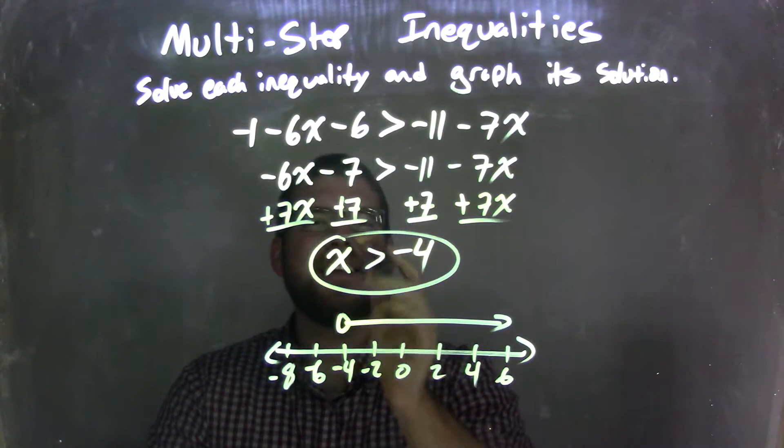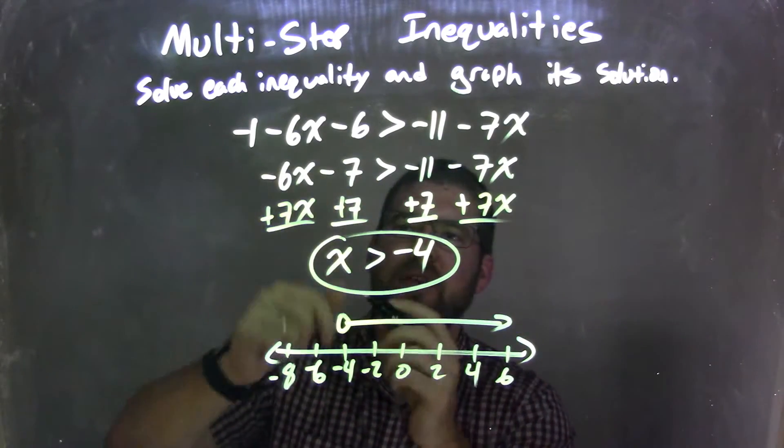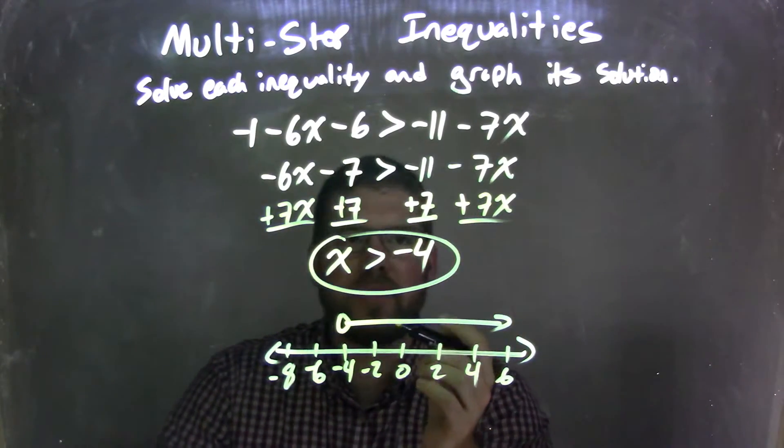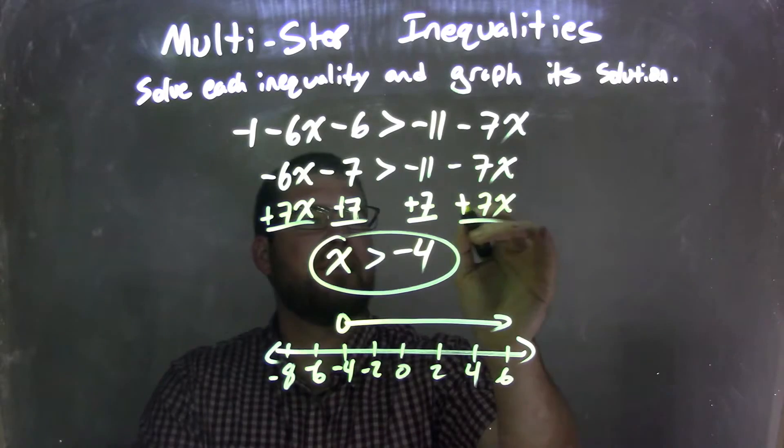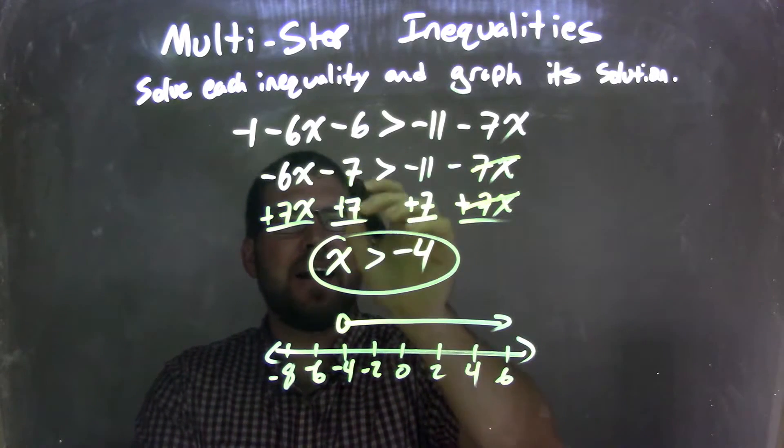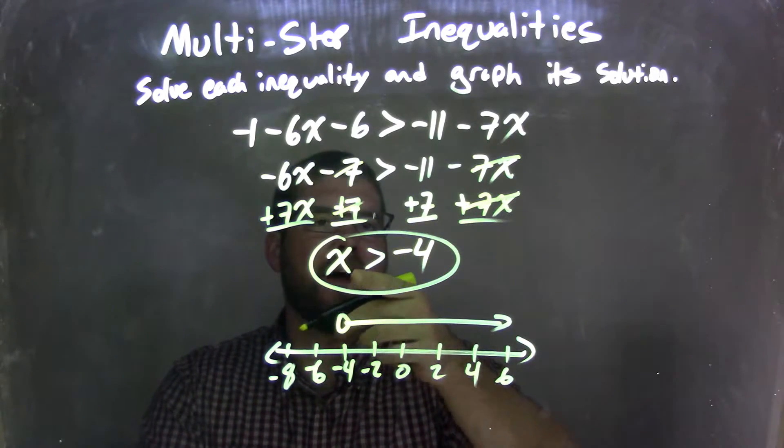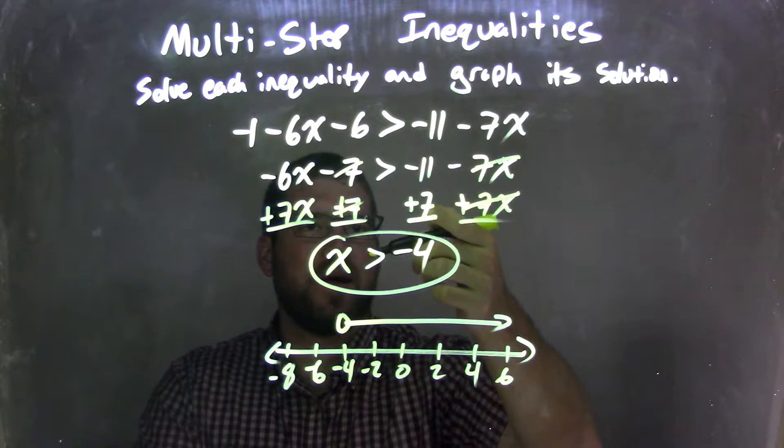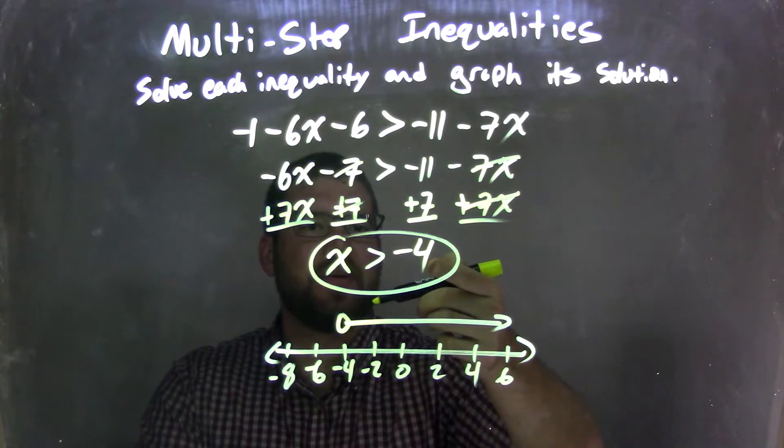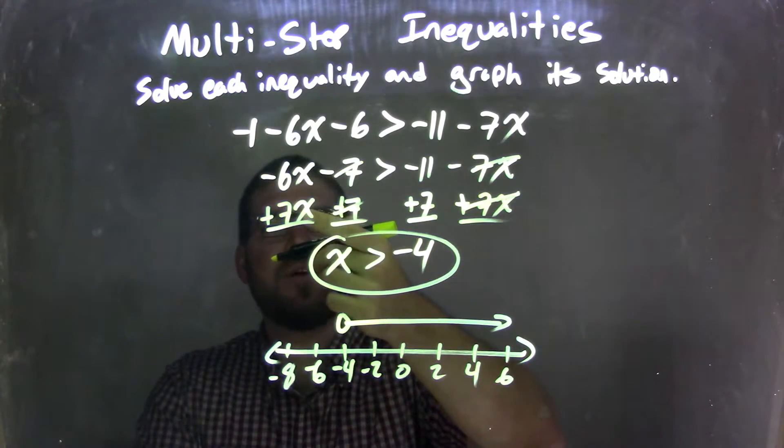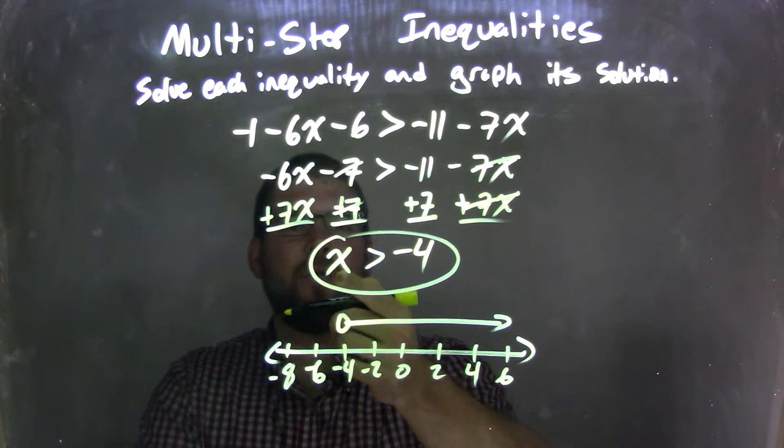And then what I did there then, I brought all my x's to one side and all my numbers to the other side. So I added a 7x to both sides, eliminating them here, and added a 7 to both sides, eliminating them there. Made sure I matched up with the corresponding numbers. So negative 11 plus 7 came out to be negative 4, and negative 6x plus a positive 7x is a positive 1x.